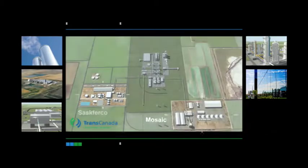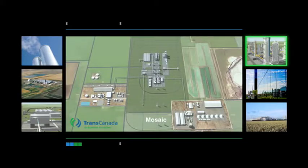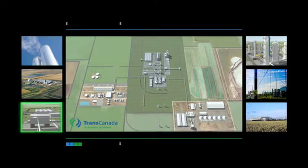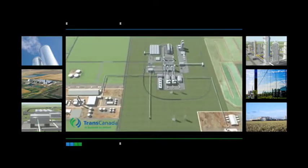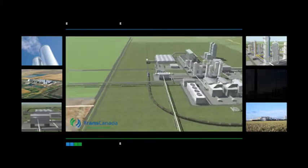The Belle Plaine polygeneration project is adjacent to two large existing industrial fertilizer operations, SaskFurco and Mosaic. These companies will use the hydrogen, steam, and carbon dioxide for their operations. Let's take a closer look at how the process works.